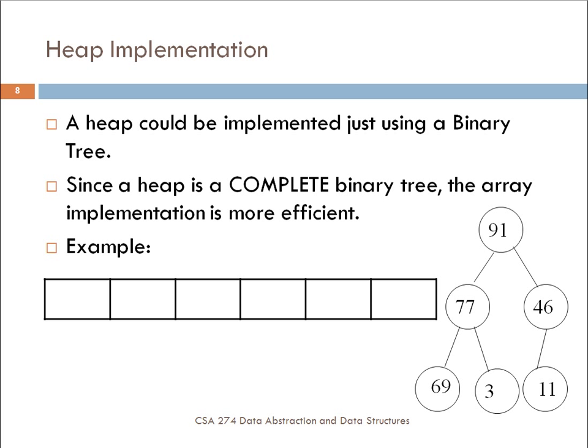If we were to take our tree that we had before in our examples, we could place all of these elements into this array using the rules of parents and children. The parent is i minus 1 over 2, and the children are 2i plus 1 and 2i plus 2. So we could do that with this particular tree. And if we do that, then the elements would be placed into the array in this order here.